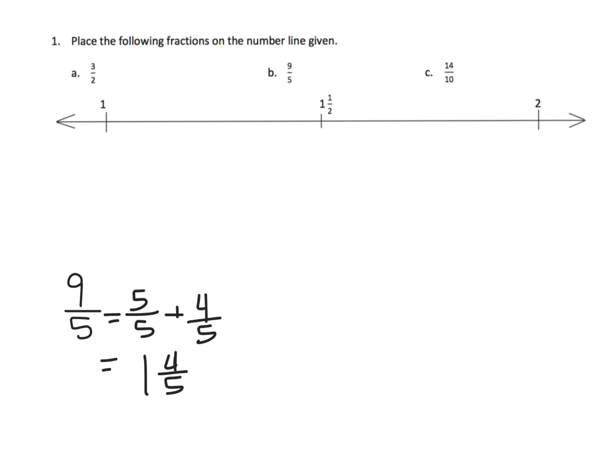All right, so now we know that 9 fifths is equal to 1 and 4 fifths. And so that's a cool little thing that we're going to be doing here, practicing how to turn improper into mixeds.